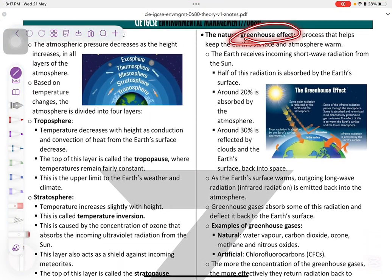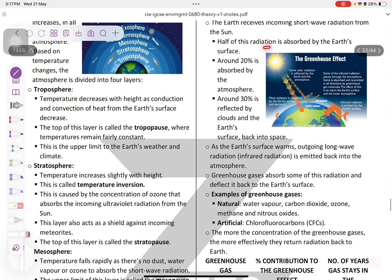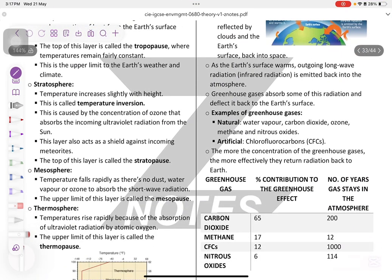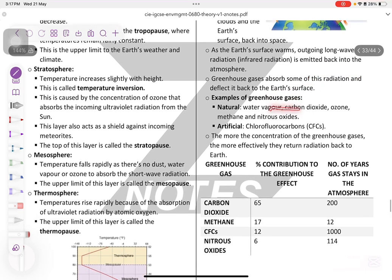The natural greenhouse effect: naturally, the greenhouse gases insulate the earth so that they keep the earth warm. The earth receives incoming shortwave radiations from the sun. Half of this radiation is observed. 20% is observed by the atmosphere. 30% is reflected back by the clouds. And the earth surface warm, outgoing long waves radiation, the infrared rays are emitted back into the atmosphere. Greenhouse gases absorb some of this radiation and deflect it back into the earth's surface.